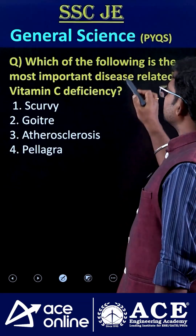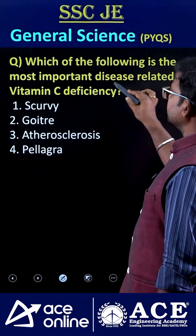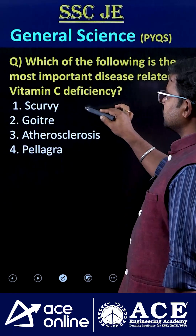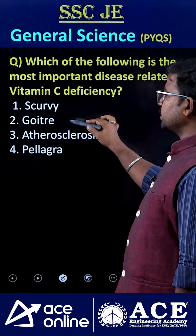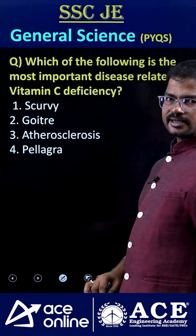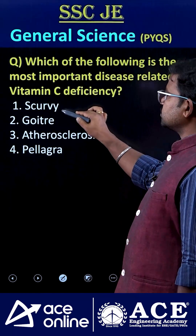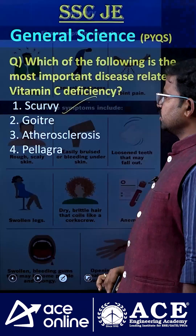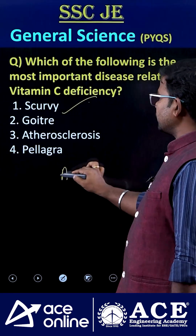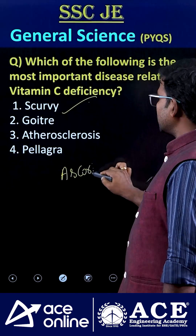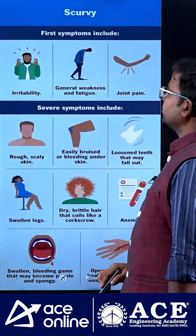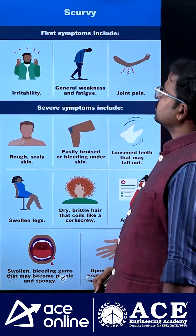Welcome to Ace Online. Which of the following is the most important disease related to vitamin C deficiency? The options are: scurvy, goiter, atherosclerosis, and pellagra. The correct answer is option one — scurvy. Vitamin C is chemically called ascorbic acid, and its deficiency causes scurvy.